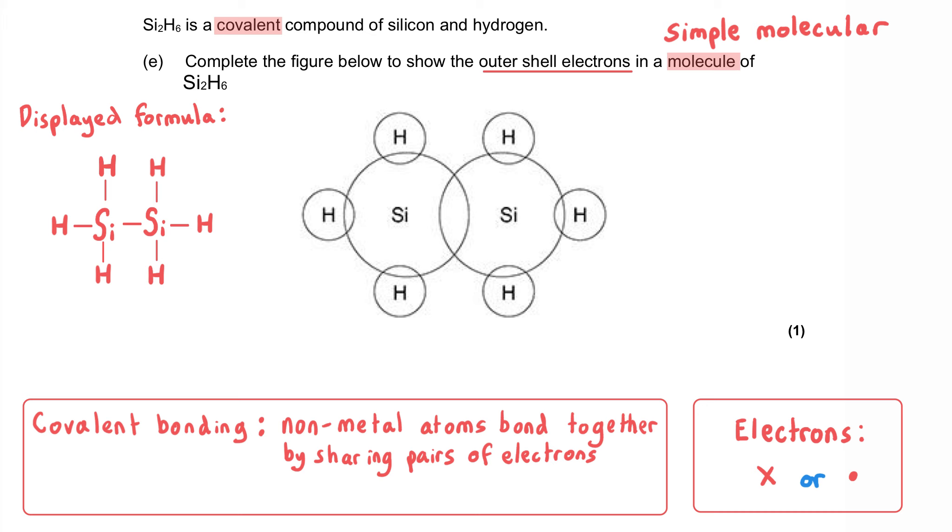And typically the electrons are represented as crosses or dots. We might also use circles or little letter Es, but I'm going to use crosses and dots. So everywhere electron shells overlap is a covalent bond. And this is typically a single covalent bond. And I'm showing single covalent bonds here with a single line.